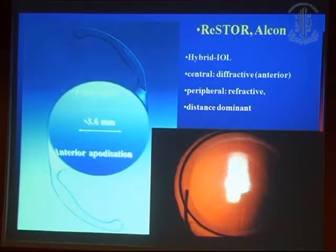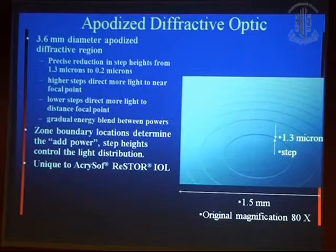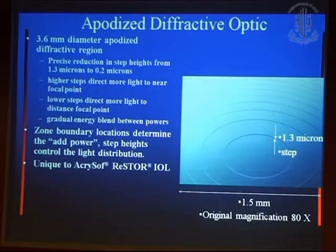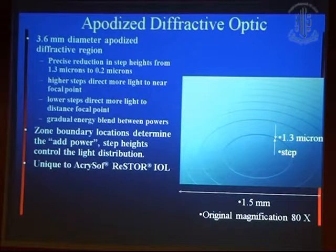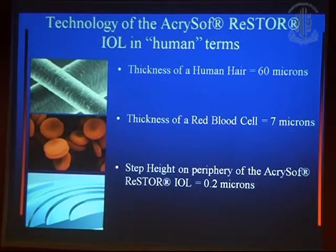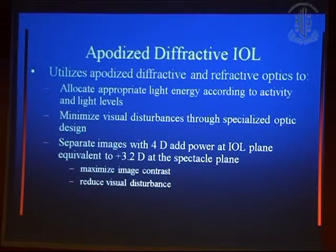The second type has a central 3.6mm of diffractive zones and the peripheral is mono-optic. It is a 3.6mm apodized diffractive zone with precise reduction in step heights from 1.3 micron to 0.2 micron from center to periphery. Lower steps mean more light to distance focus. As the pupil size changes, the amount of light increases or decreases. The thickness of human hair varies around 60 micron, and a red blood cell is 7 micron, but the smallest step is as low as 0.2 micron. The apodized diffractive surface increases light for distance when pupil size is larger and increases light for near when the pupil size is smaller.